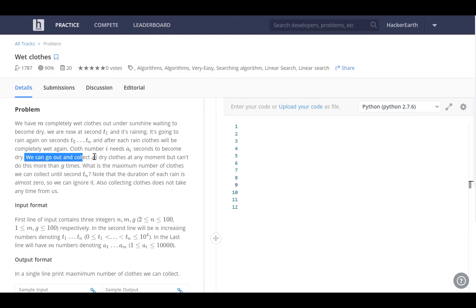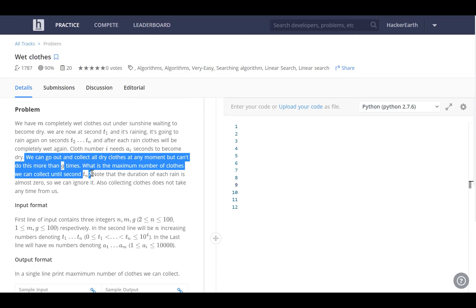We can go out and collect all the dry clothes at any moment but we can't do this more than g times. What is the maximum number of clothes that we can collect until second tn?